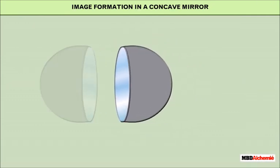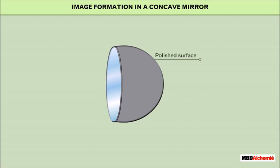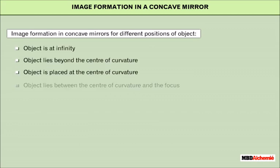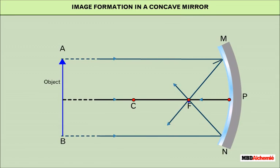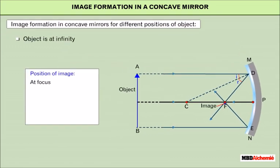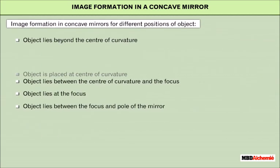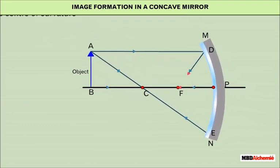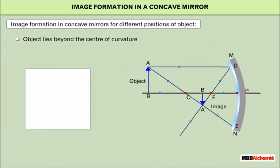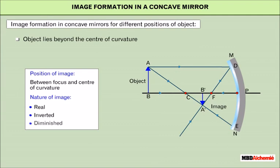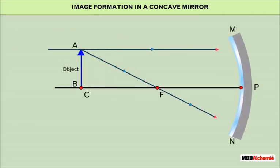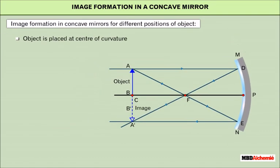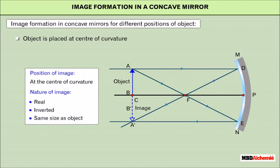Image Formation in a Concave Mirror. A concave mirror is polished from the outer side of a hollow sphere and whose reflecting surface is curved inwards. When the object is at infinity, the image is formed at the focus, which is real, inverted, and highly diminished. When the object lies beyond the center of curvature, the image is formed between the focus and the center of curvature, which is real, inverted, and diminished. When the object is placed at the center of curvature, the image is formed at the center of curvature, which is real, inverted, and of the same size as the object.